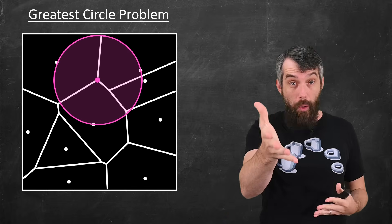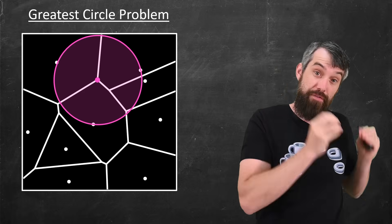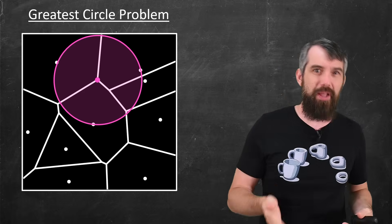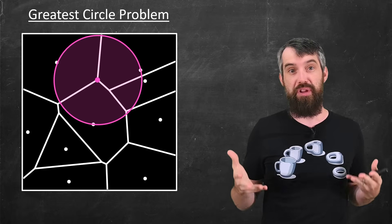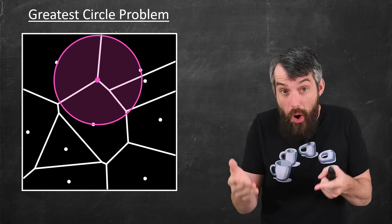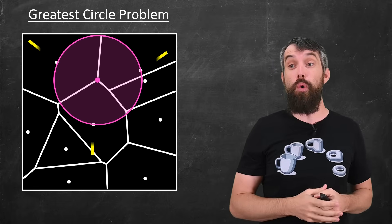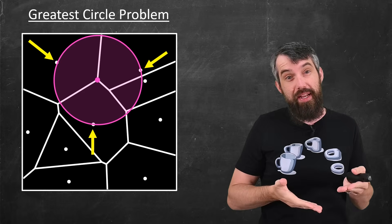The maximum circles are always going to occur on either the vertices of a Voronoi diagram, or it could be one of the edges of the Voronoi diagram where it intersects the boundary of your region. Indeed, if you are on a vertex, this is equal distance to those three closest points.